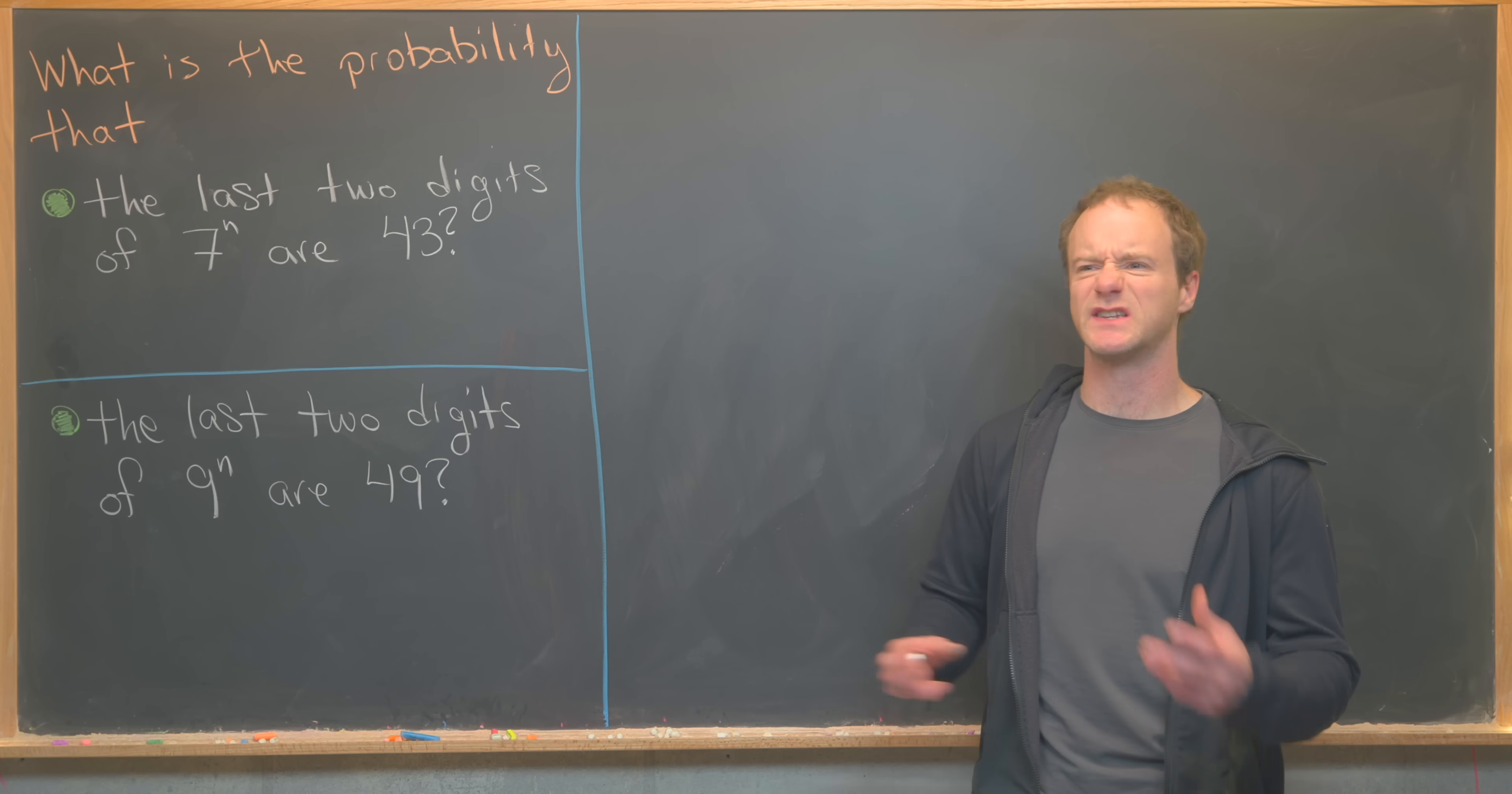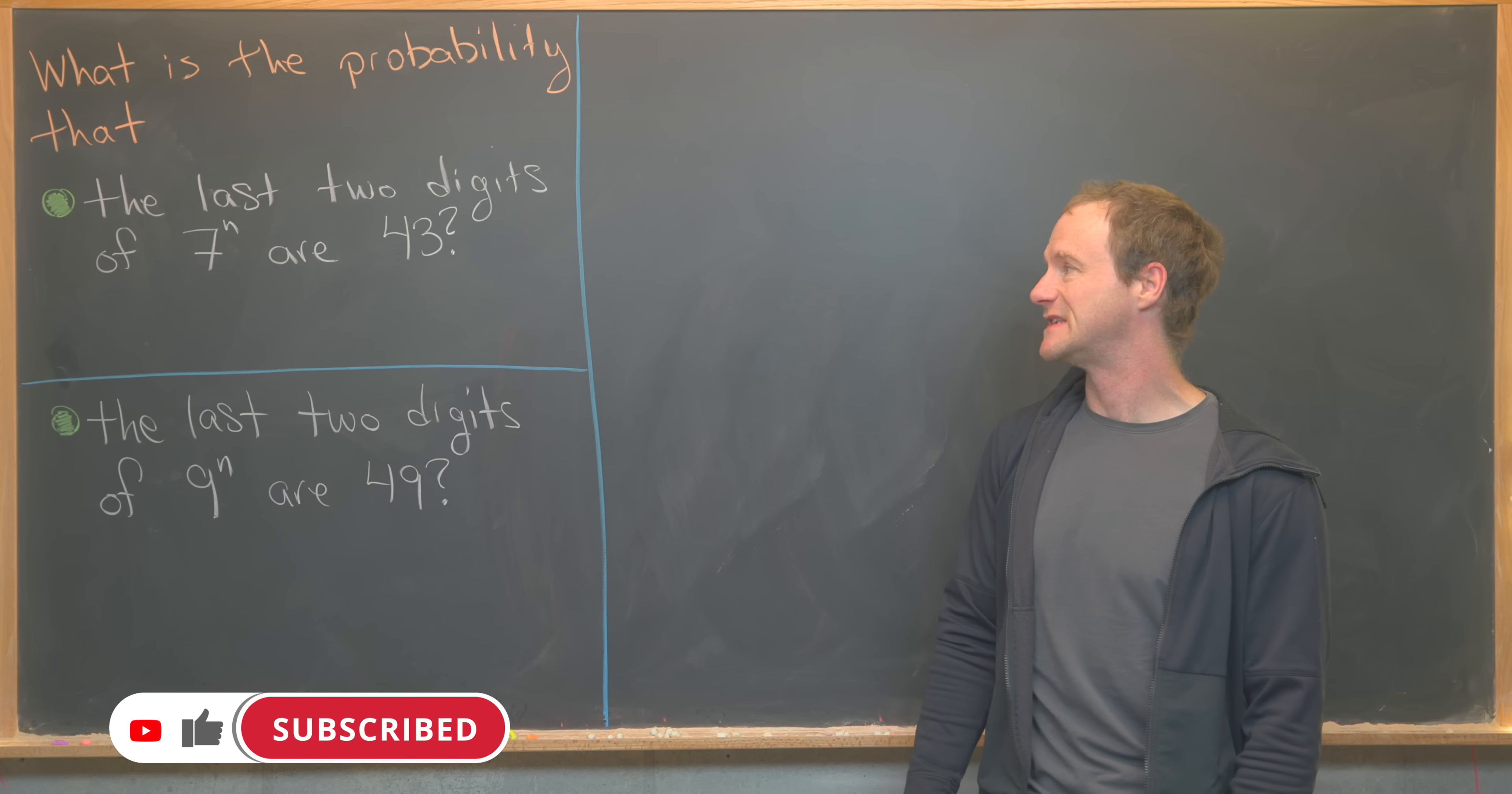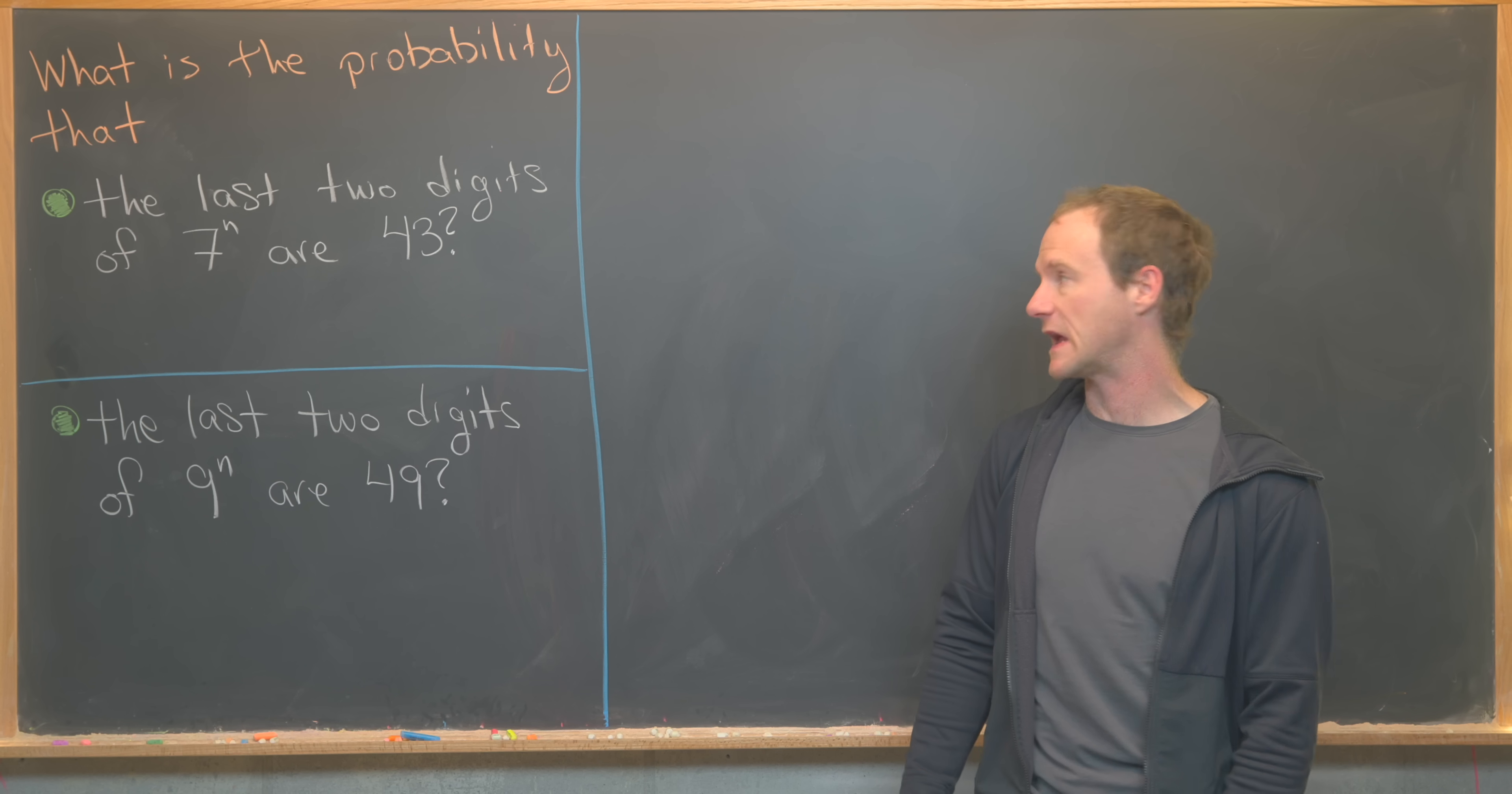Here I've got two related interesting number theory probability type problems. So the first one is, what is the probability that the last two digits of 7 to the n are 4 and 3? In other words, as n ranges over all natural numbers, what's the probability that it ends in 43?